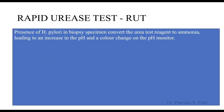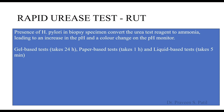The rapid urease test (RUT) is the most commonly used invasive investigation. H. pylori in the biopsy specimen converts urea to ammonia, leading to an increase in pH of the media, and a color change in the pH indicator. RUT is performed by three methods: gel-based (takes up to 24 hours), paper-based (around one hour), and liquid-based (the most commonly used, takes about five minutes).